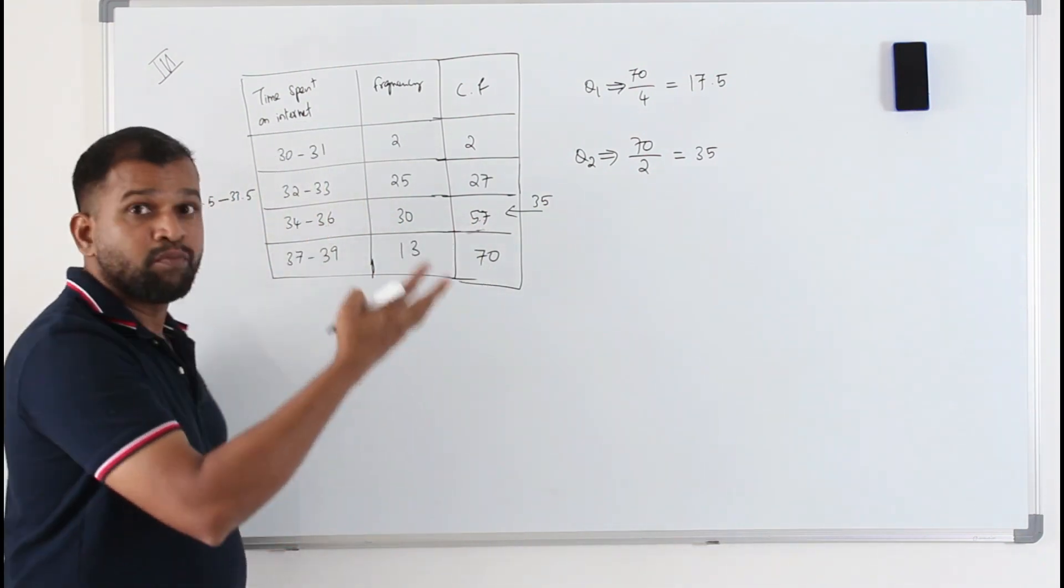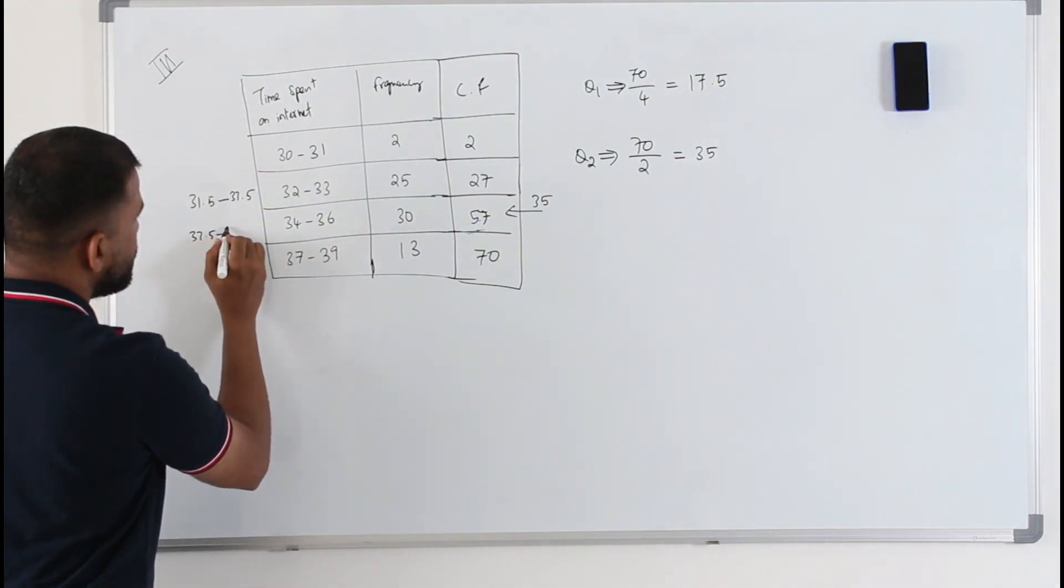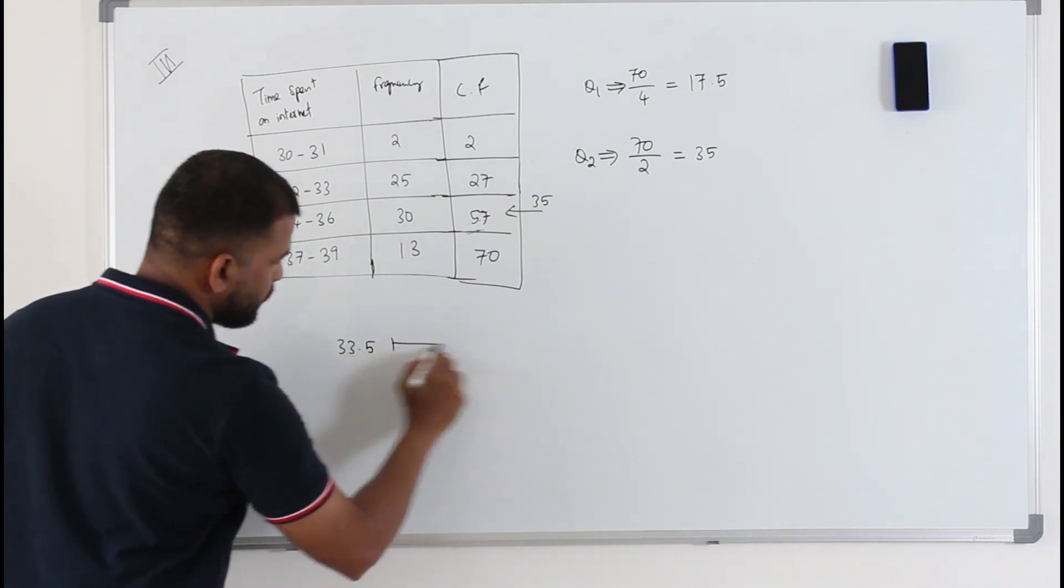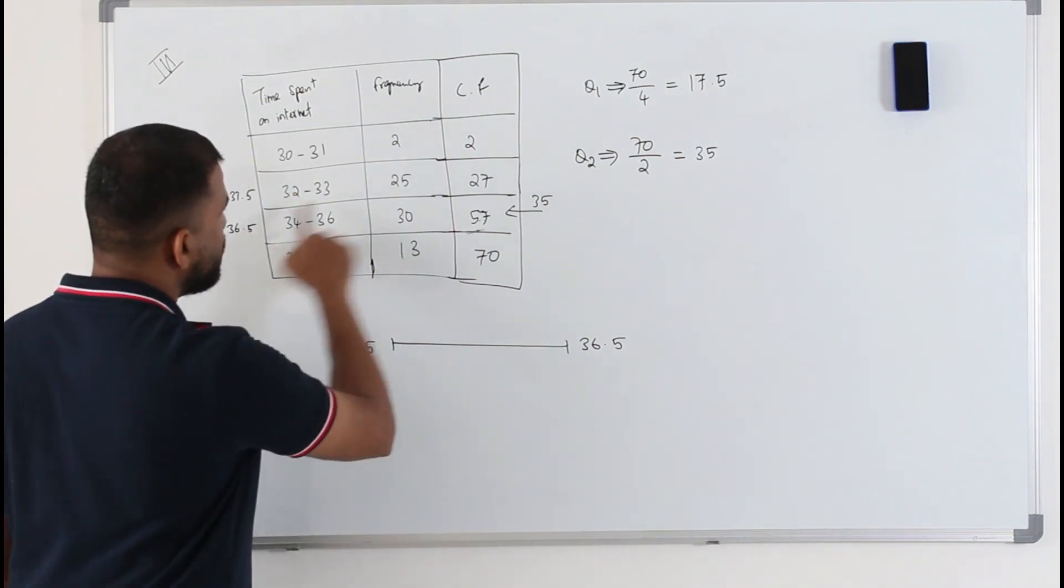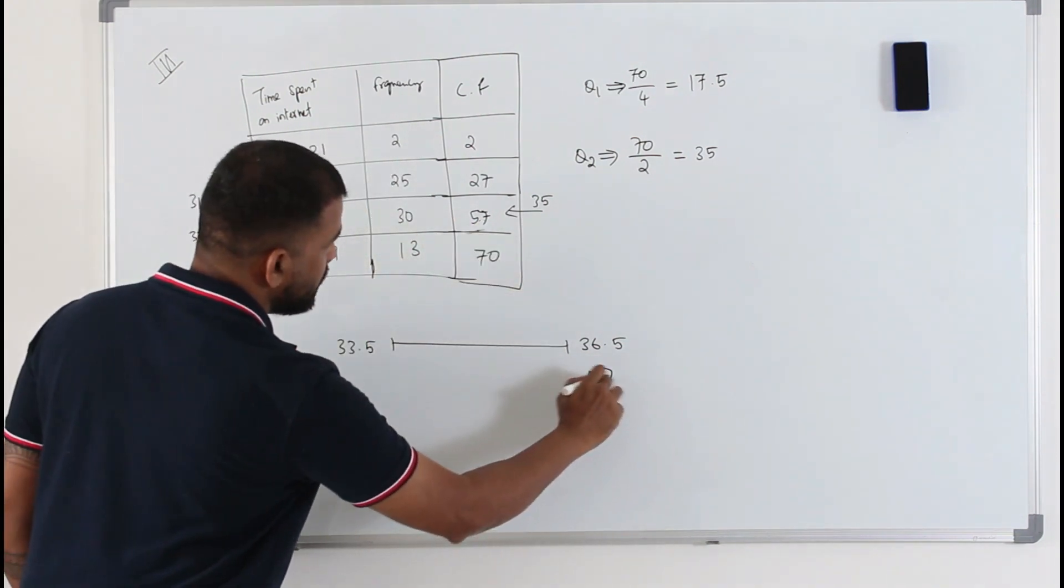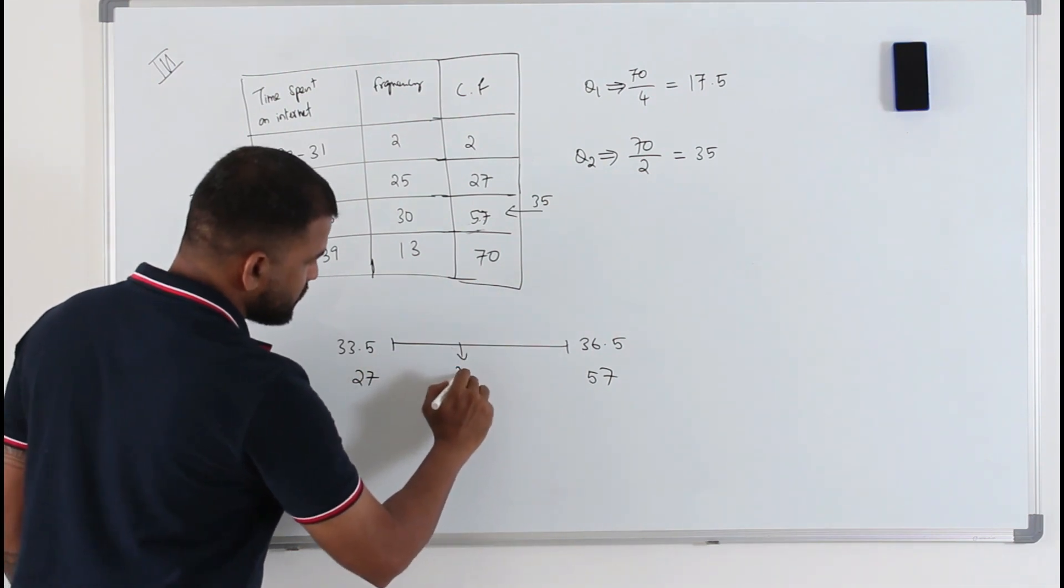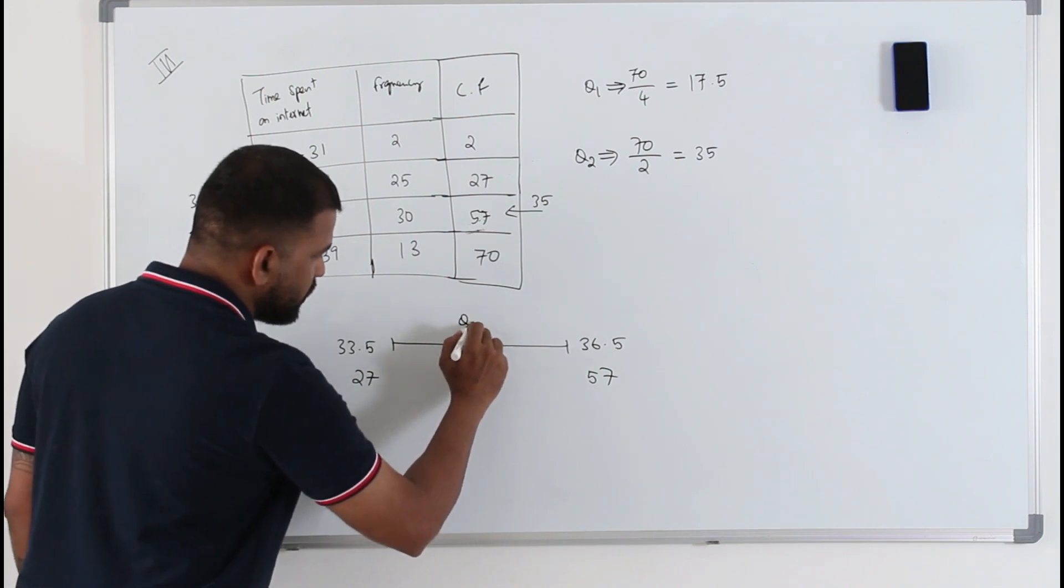Not class interval - class boundaries. So here it's going to be 33.5 to 36.5. The corresponding cumulative frequency and the previous cumulative frequency - your 35 is somewhere in between this. The corresponding value here is going to be Q2.